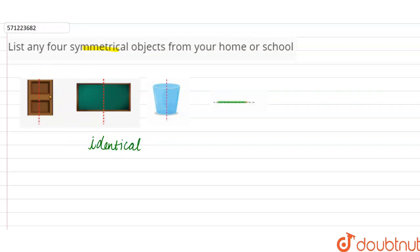For example, this door. If you can see, when we divide this door into two equal halves, both the parts are identical. Similarly, green board is one such example.